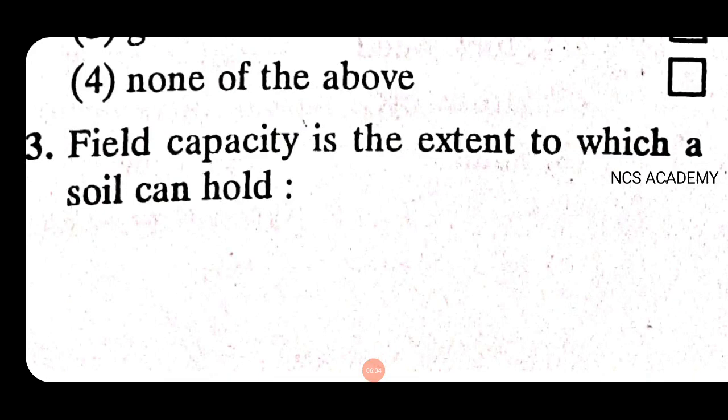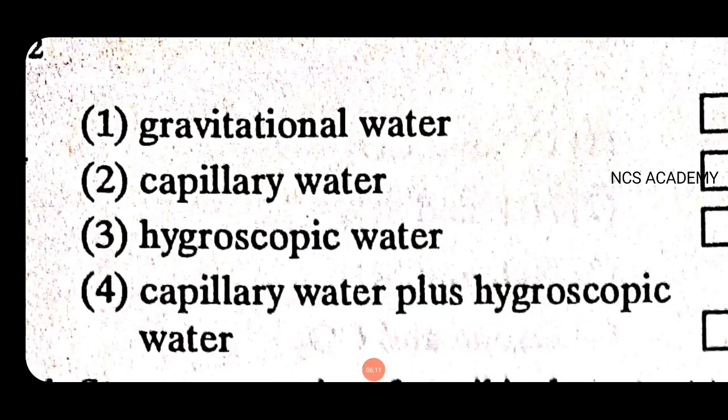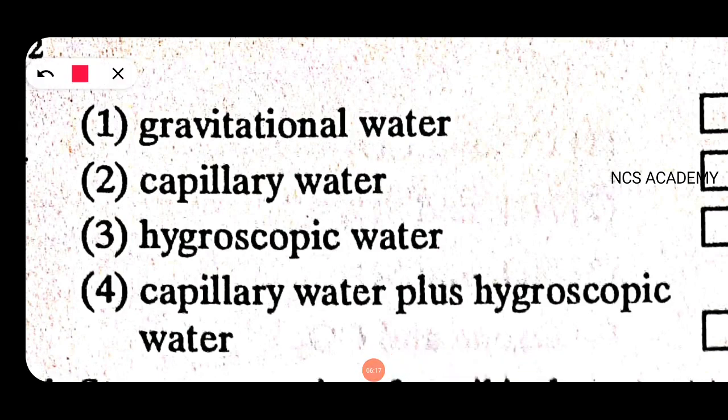Field capacity is the extent to which a soil can hold capillary water plus microscopic water — that is the right answer, option four.